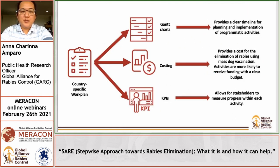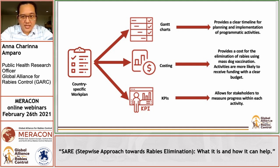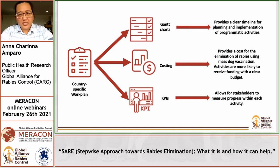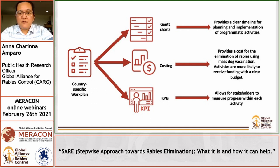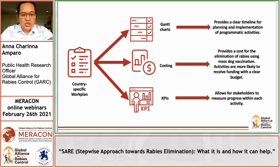The country-specific work plan will then have three major outputs: the Gantt charts, which will provide a clear timeline for planning and implementation of programmatic activities; the costing, which will provide an estimate of the cost for the elimination of rabies using mass dog vaccination — important because activities are more likely to receive funding if they have a clear budget; and key performance indicators, which allow stakeholders to measure progress within each activity.